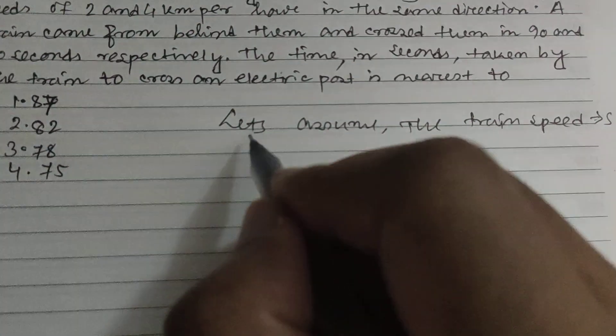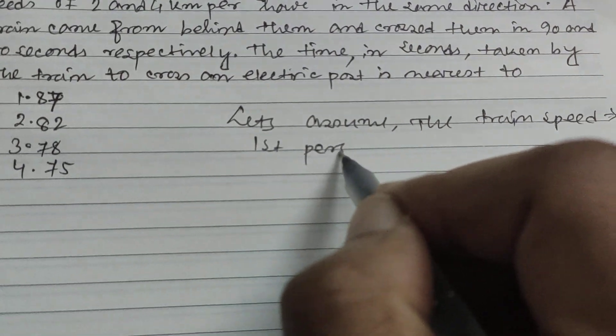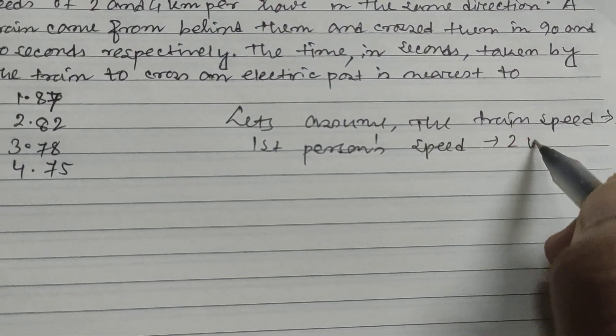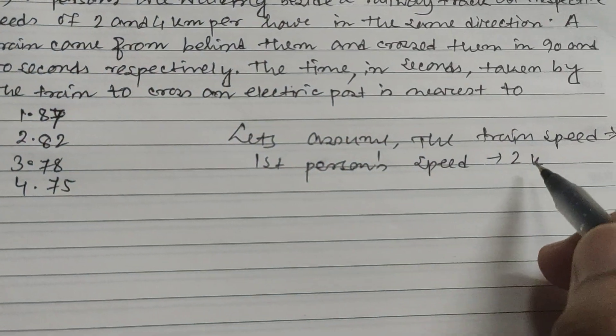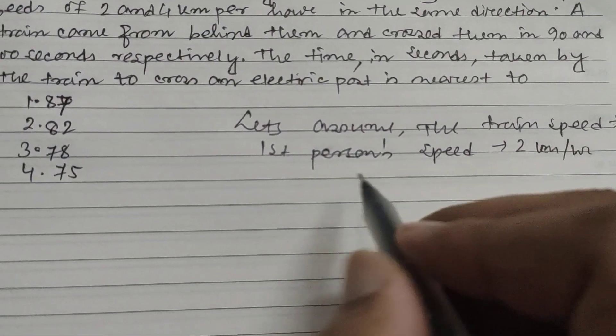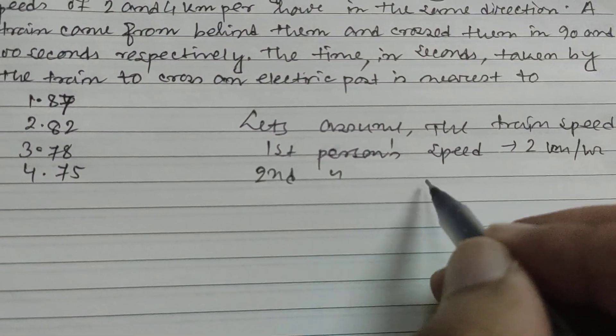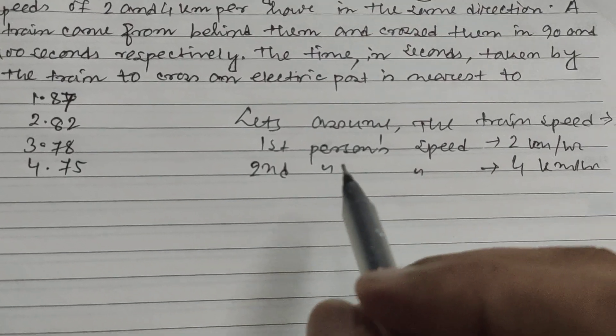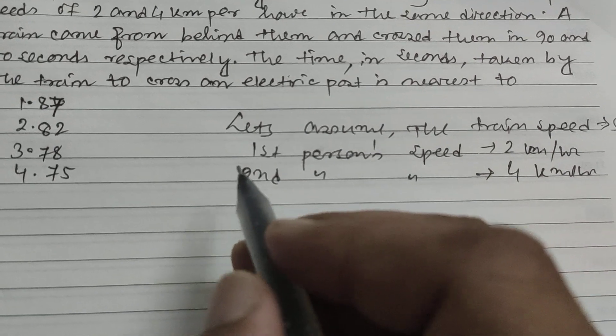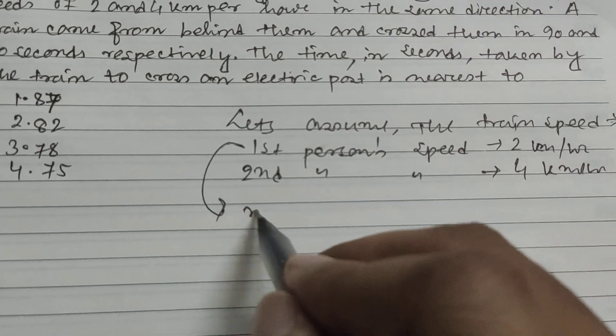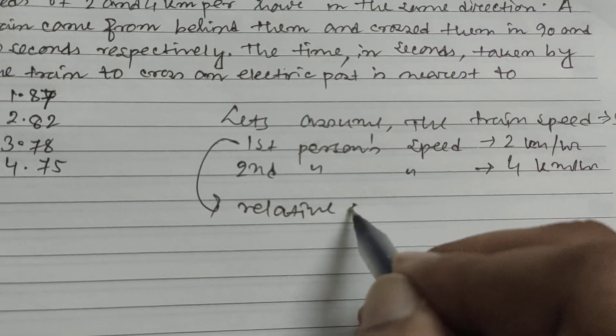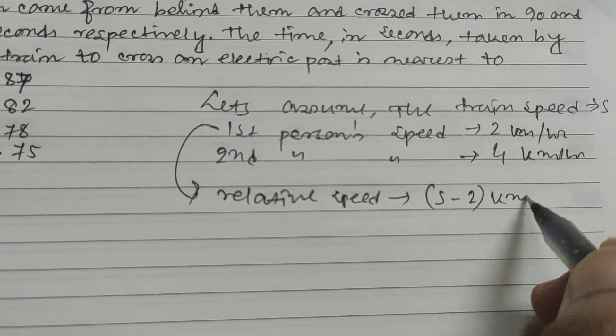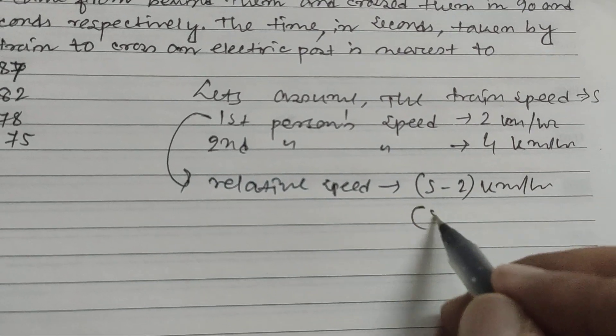First person's speed is 2 kilometer per hour and second person's speed is 4 kilometer per hour. According to the train, the relative speed for the first person is s minus 2 kilometer per hour and for the second person this is s minus 4 kilometer per hour, as the direction is the same.